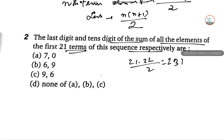And now find the sum of the first 21 terms. We find the sum of the first 231 natural numbers. So 231 natural numbers is 231 into 232 by 2. So this is 116. 231 into 116 is 26796.